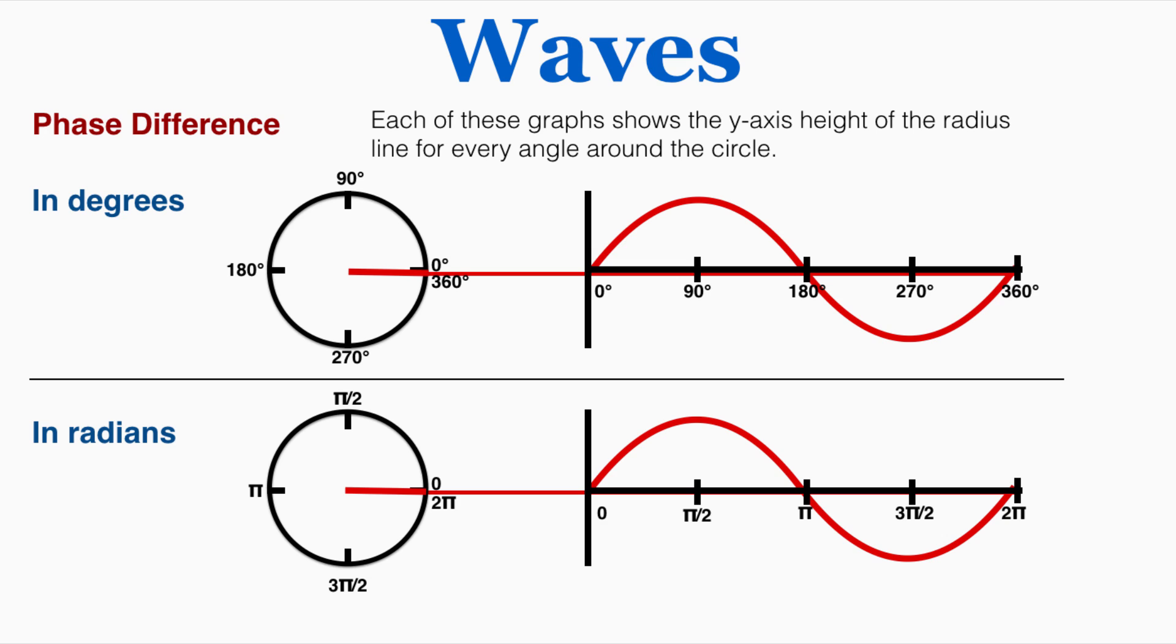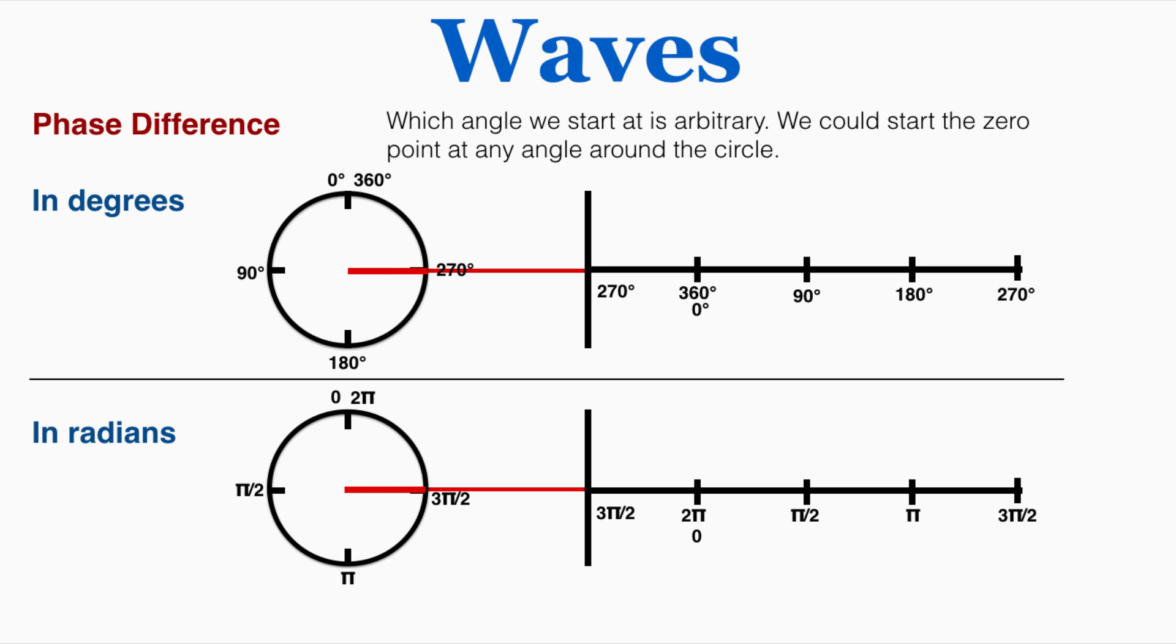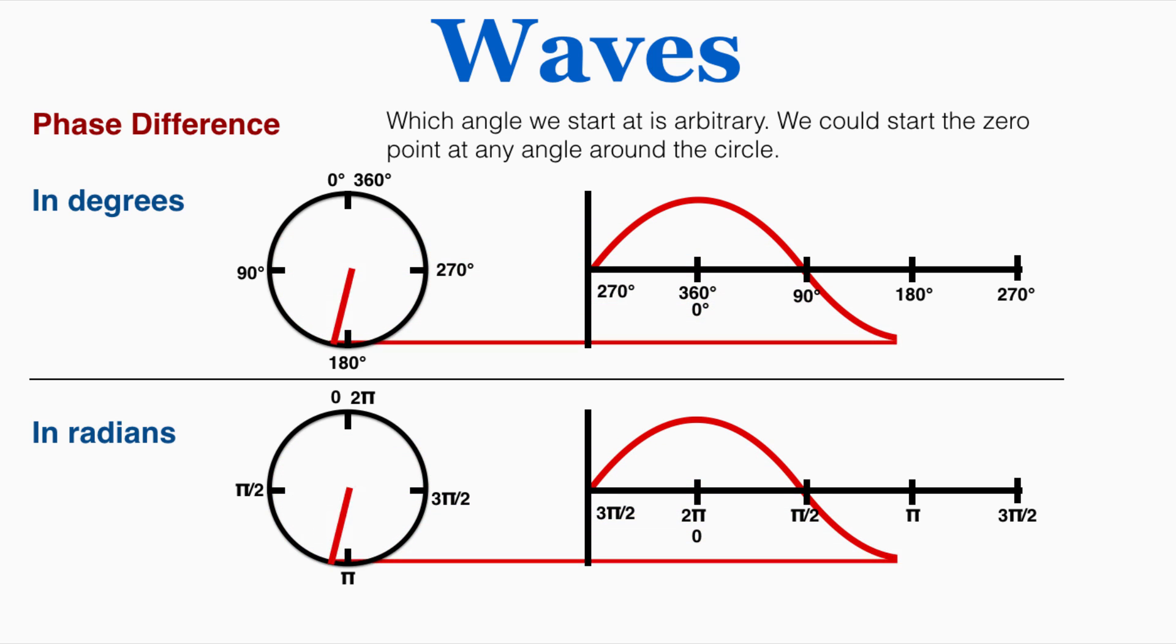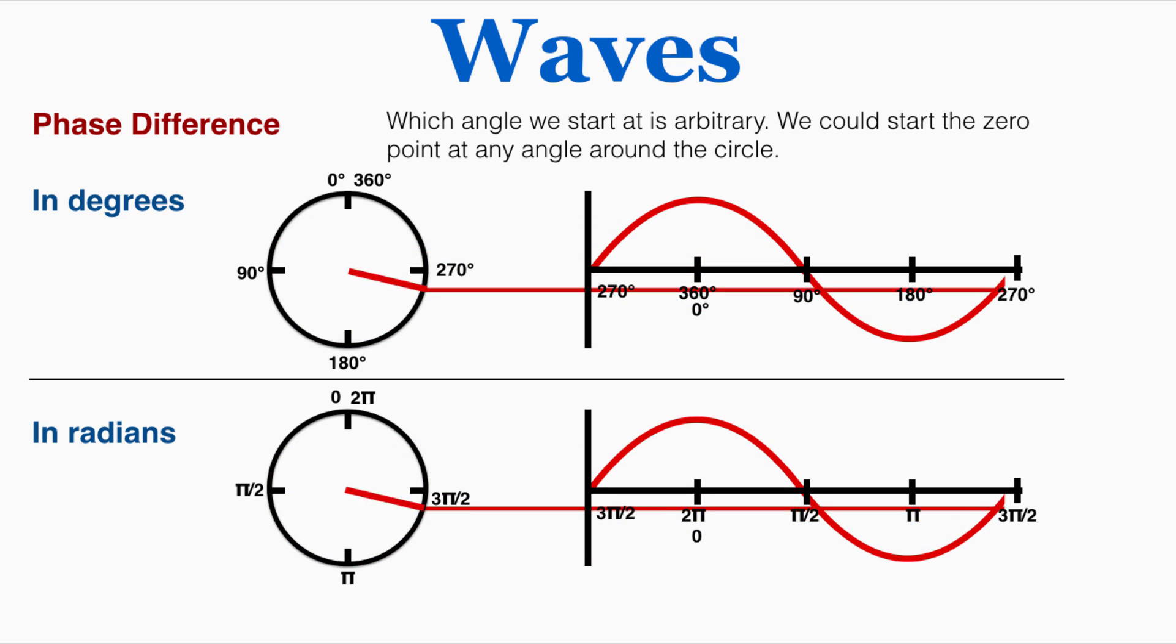The specific angle that we start from in the circle is kind of arbitrary. We could also make wave graphs that look like this, just starting from different angles around the circle. And that still produces the same pattern. So the specific angle that a wave is at at different points isn't really a constant, but there's something that is constant in the shape of a wave.